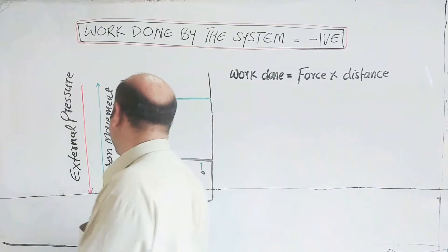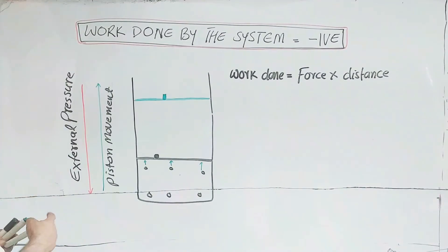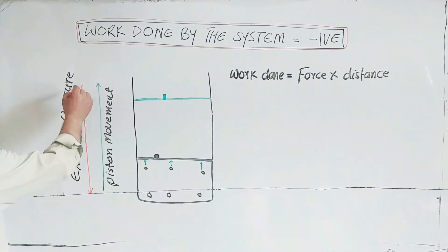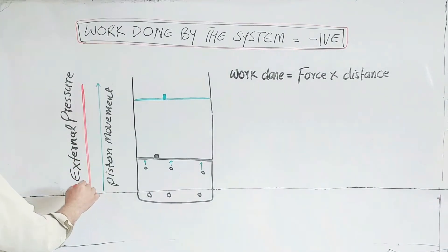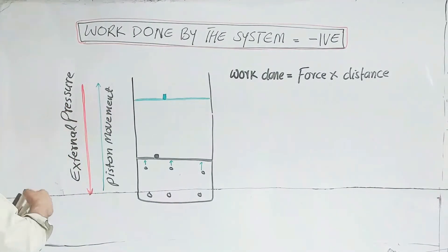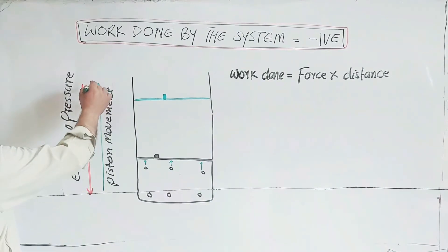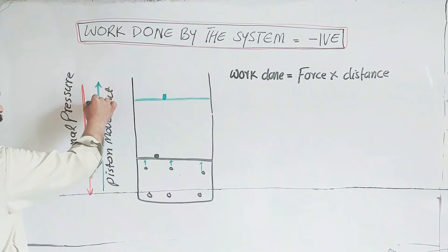Green line and red line, observe the direction. External pressure direction is downward and work done is upward.